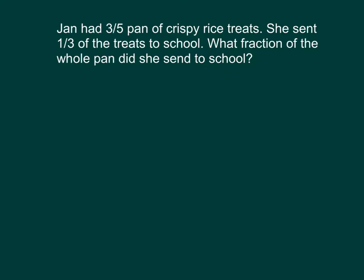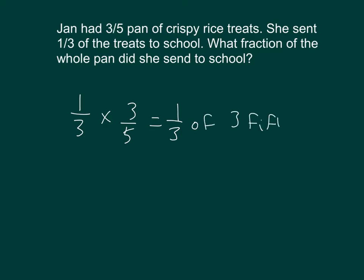This problem is different from the ones we solved the other day, in that we have three-fifths of a pan of rice crispy treats, and we're taking one-third of that. We're finding one-third of three-fifths of a pan of treats. If we had one-third of three bananas, we would have just one banana. One-third of any unit is just one of those units. So when we take one-third of three-fifths, we end up getting one-third of three-fifths, which equals one-fifth.